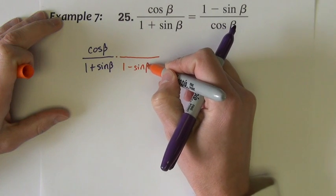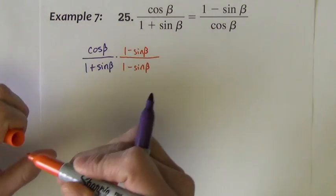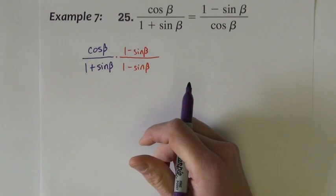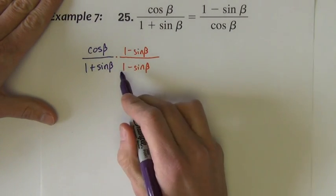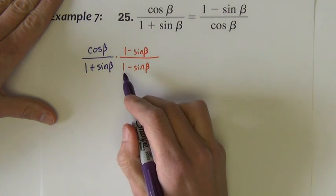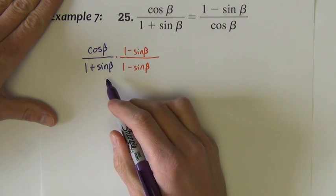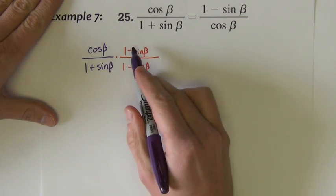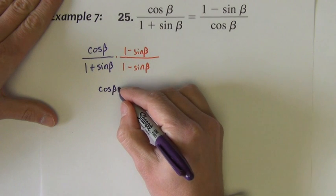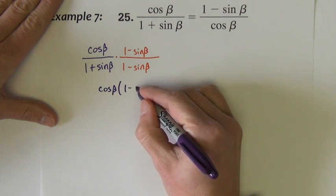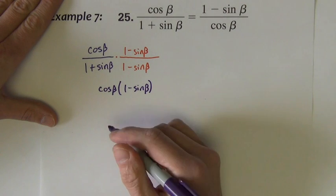1 minus sine beta. What's going to happen now when I FOIL the denominators together is I'm going to create a sine squared, and if I create a sine squared, that's going to lead me to a Pythagorean identity for a substitution. So up in the numerator, let's see, the numerator I'm going to leave as it is. I'm not going to distribute up in the numerator.